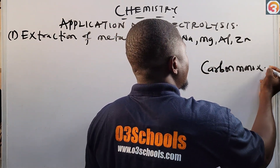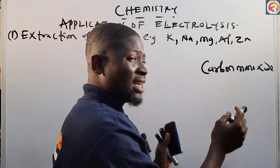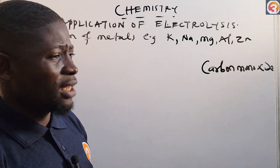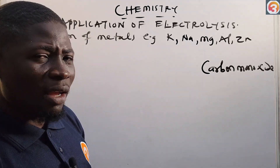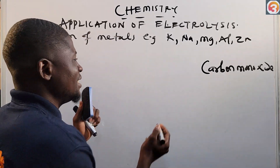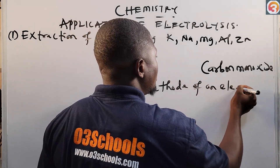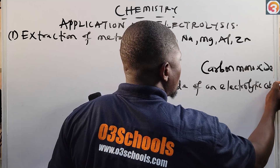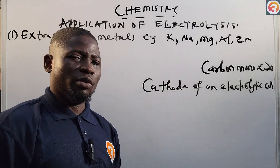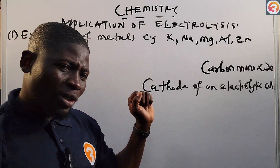Carbon monoxide is a simple reducing agent, but it cannot reduce the compounds formed by these metals. Instead, we use very powerful reducing agents — specifically the cathode of an electrolytic cell — to reduce these stable compounds.